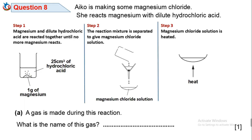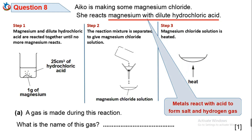Question 8. Aiko is making some magnesium chloride. She reacts magnesium with dilute hydrochloric acid. In step 1, magnesium and dilute hydrochloric acid react together until no more magnesium reacts. Question 8a: A gas is made during this reaction — what is the name of this gas? Magnesium is a metal and hydrochloric acid is an acid. When metals react with acid, salt is formed and hydrogen gas is given off. Hence, the gas formed is hydrogen gas.